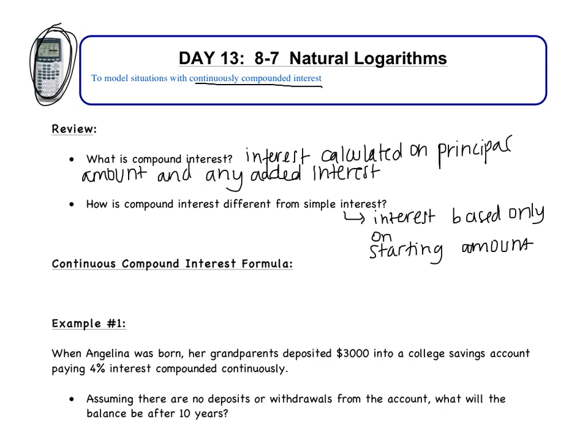Previously, compound interest was compounded a certain number of times per year — monthly (12 times), twice a year, or quarterly (4 times). Today we're doing continuous compound interest, which is compounded every second, continuously without stop. This is a new formula.